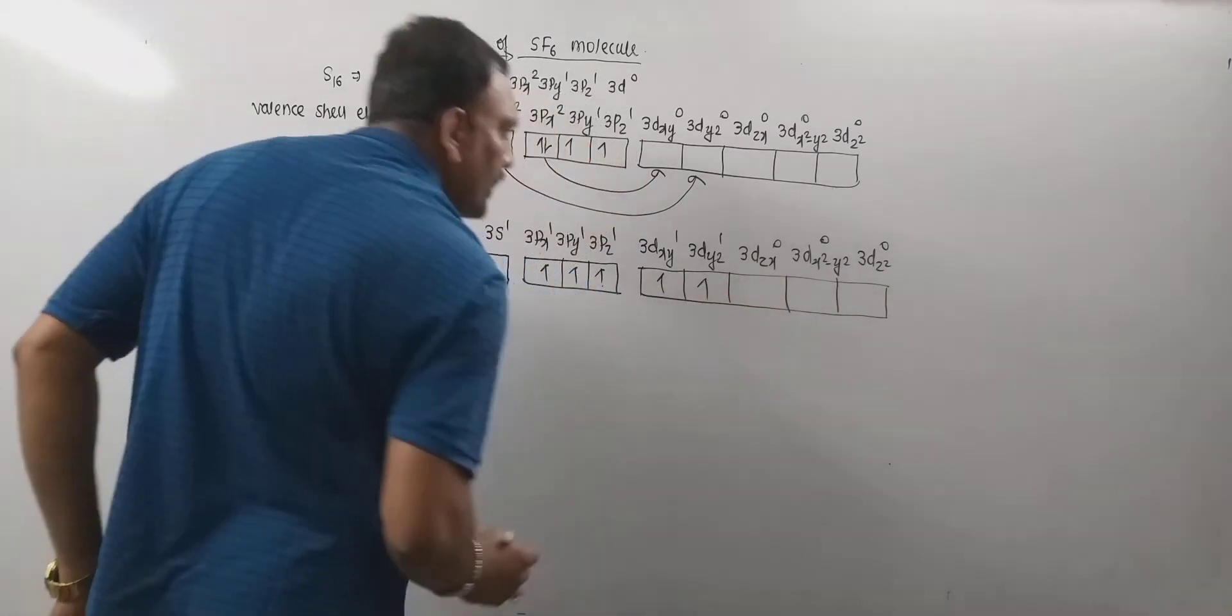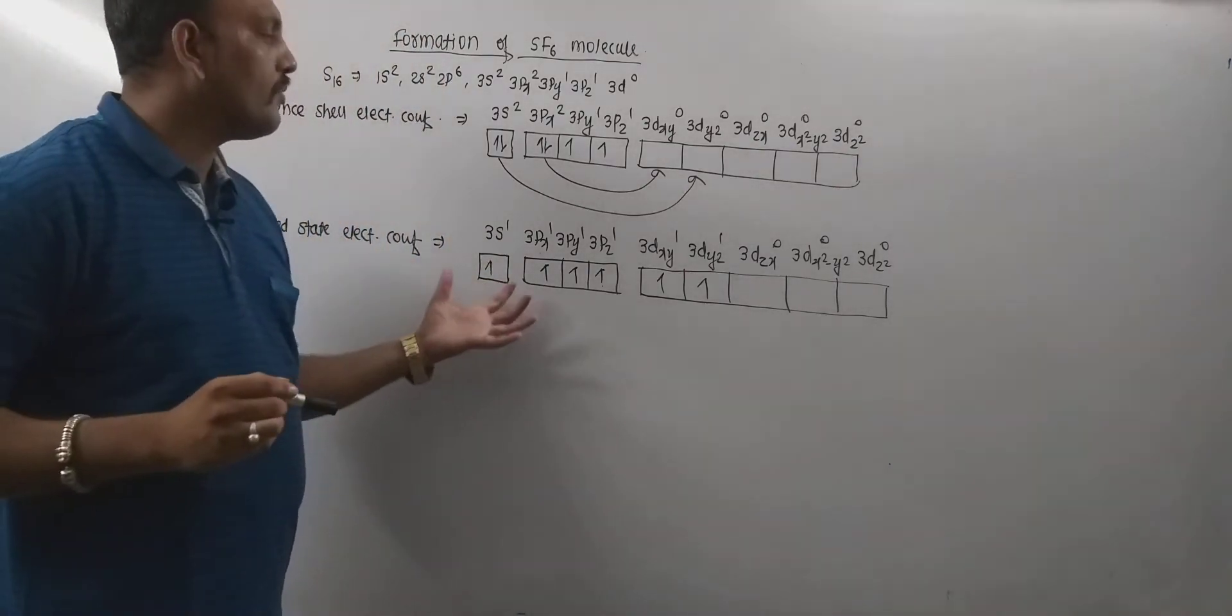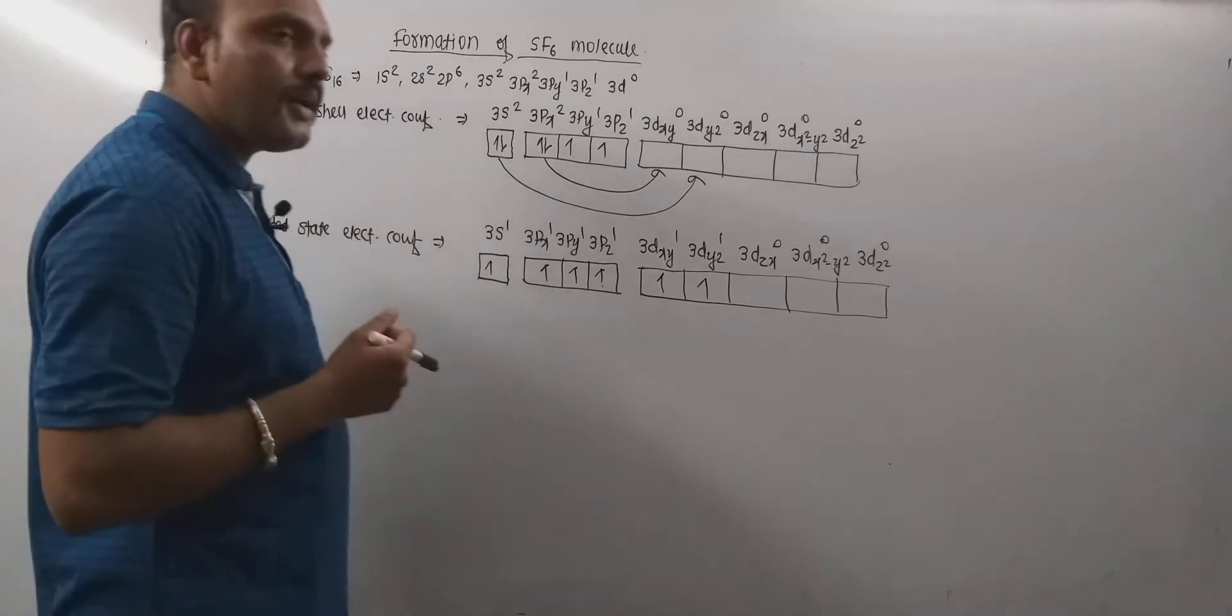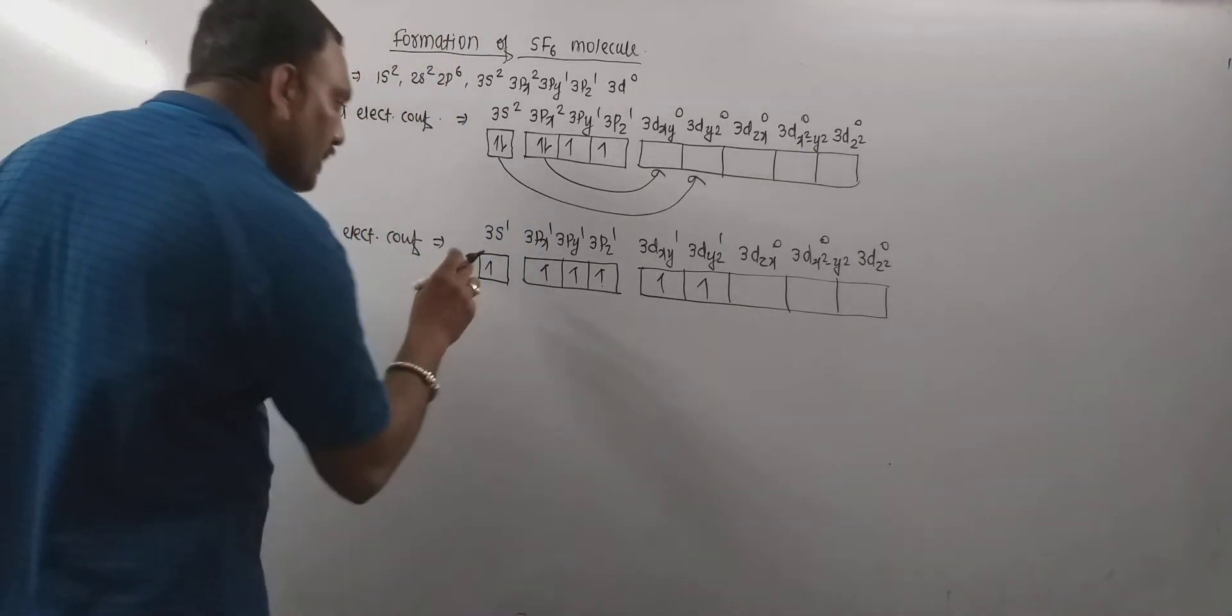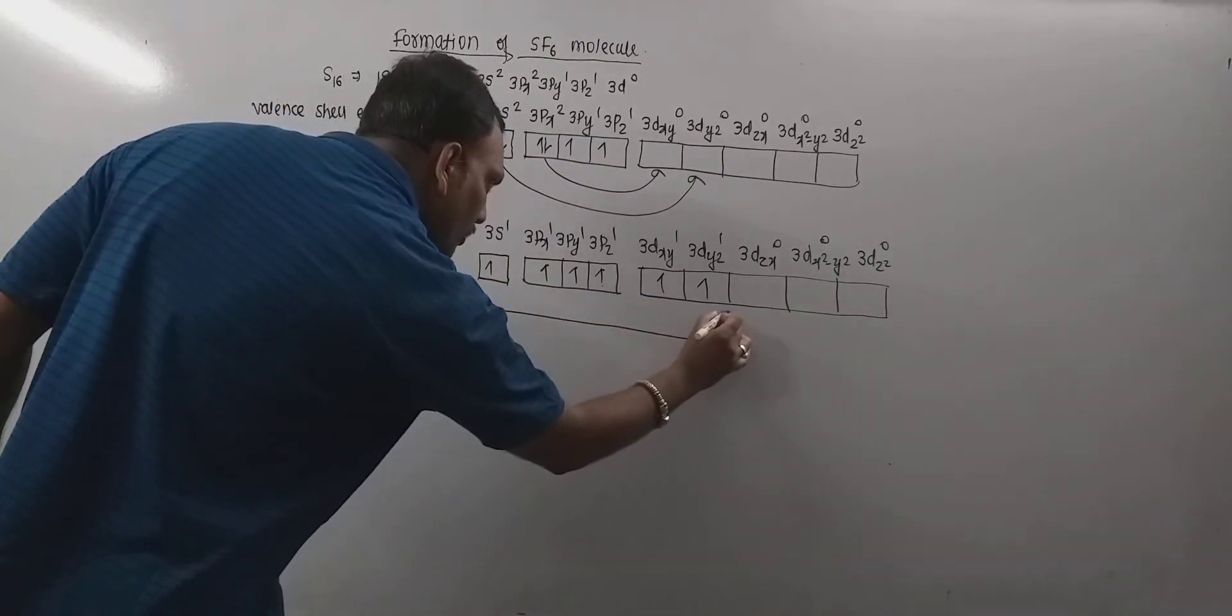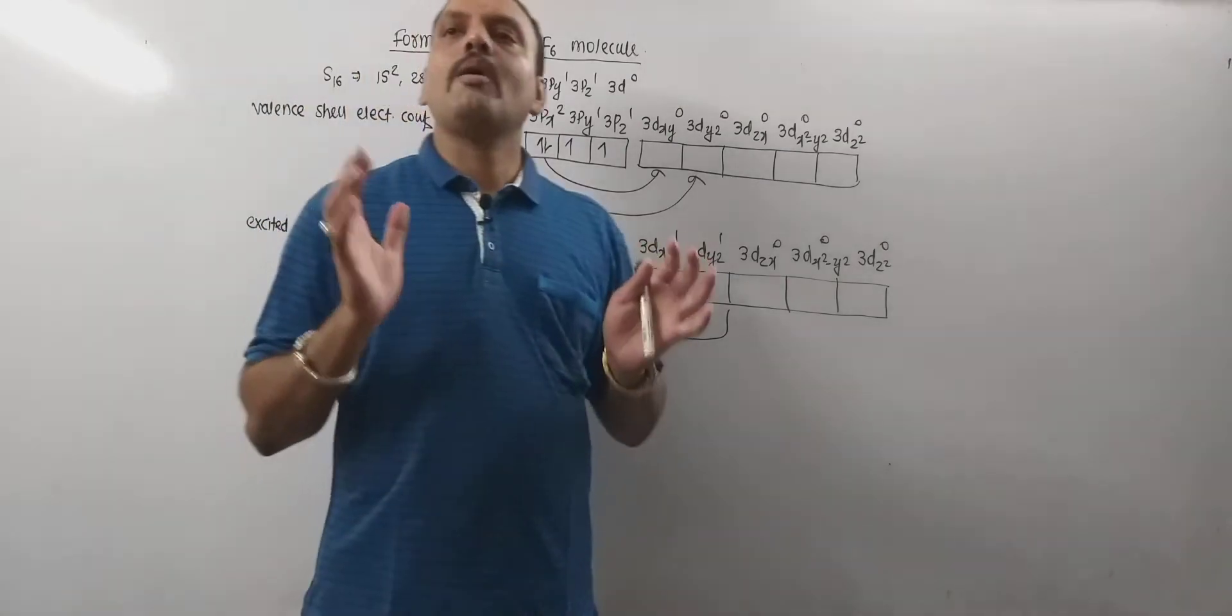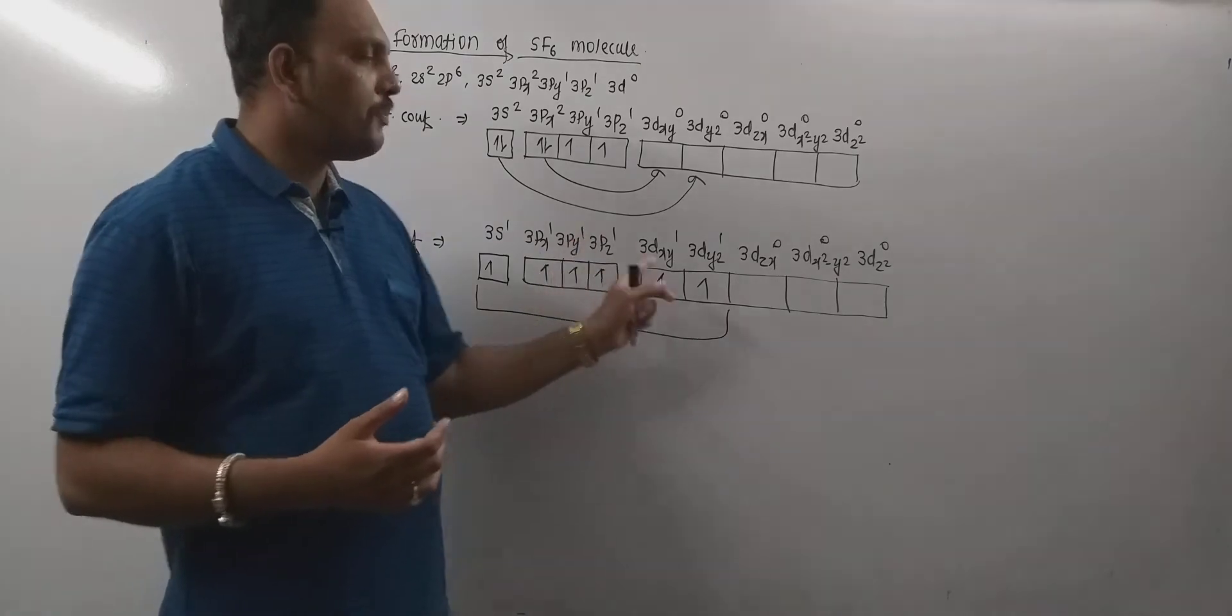Now, one can draw in this manner. Now, in excited state sulfur has 6 unpaired electrons in the valence shell. Now, during the formation of SF6, sulfur undergo SP3D2 hybridization by mixing 1s, 3p and 2d orbitals. So, these are the atomic orbitals which take part in the process of hybridization and remember each and every atomic orbital taking part in the process of hybridization contain unpaired electrons.